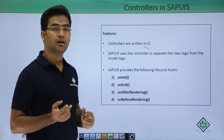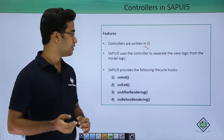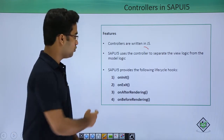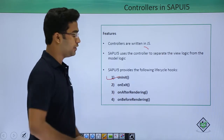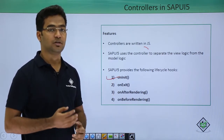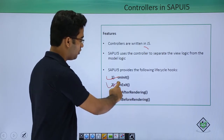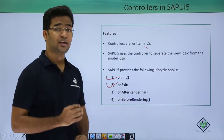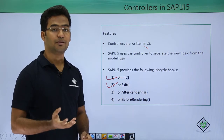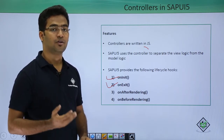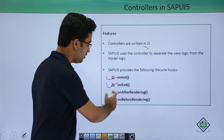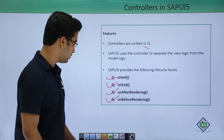In the on init event, when the SAPUI5 application initializes, what should happen during initialization — that code we write in the on init function. What happens when the application exits — that we write in the on exit function. And if a particular control is rendered, what happens before rendering and what happens after rendering should be written in the on after rendering and on before rendering methods.